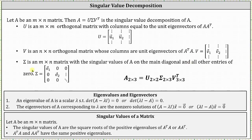We will look at an example where matrix A is a two by three matrix. Let's check the dimensions of U, V, V transpose, and sigma. If A is a two by three matrix, M is two and N is three, so U is a two by two matrix. Sigma is a two by three matrix. V and V transpose are both N by N, so V transpose is a three by three matrix.